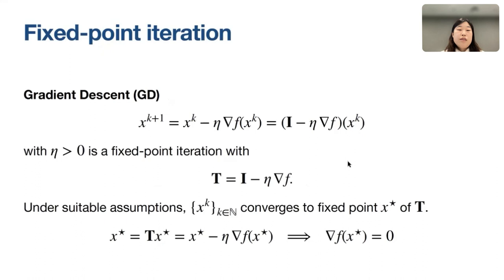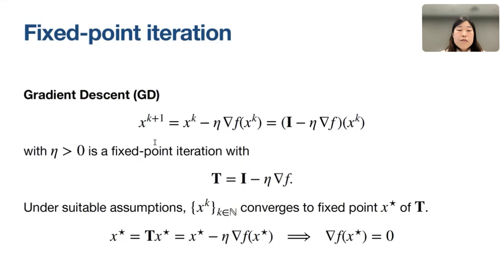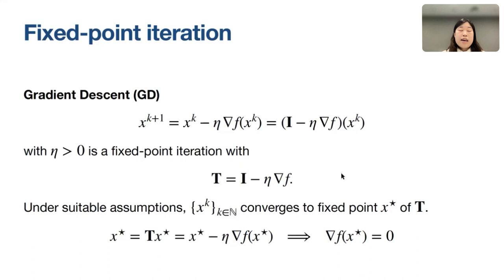One very simple example is gradient descent. When the objective is to find the minimum or stationary point of a function f, gradient descent updates the next iterate as xk minus eta times the gradient of f evaluated at xk. With eta positive, this is also a fixed point iteration with operator T being the identity minus eta times the gradient of f. Under suitable assumptions, xk converges to the stationary point.